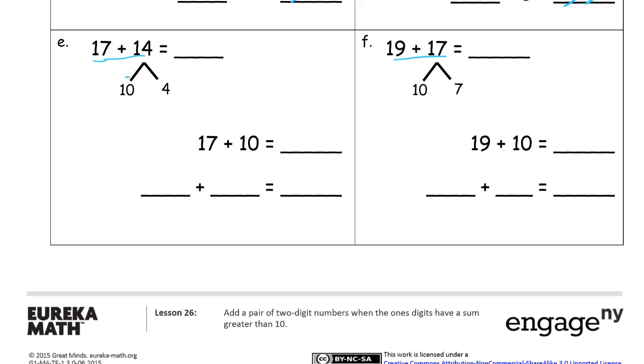Starting with the 17, we're going to add the 10 first, and then the 4. So, that's 27. And then take the 27 and add the 4. 31.